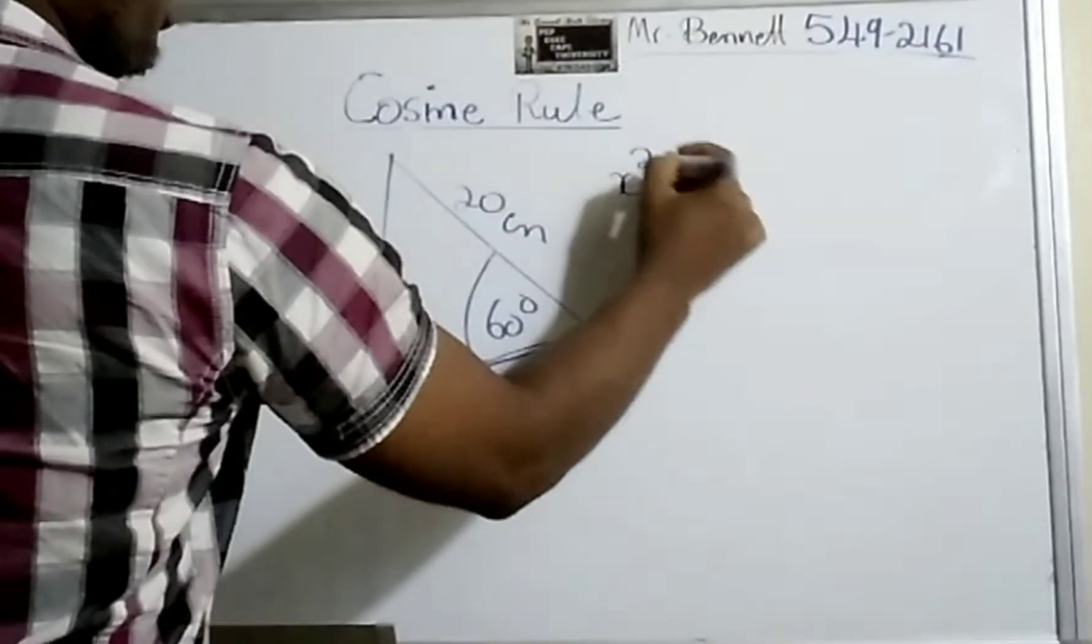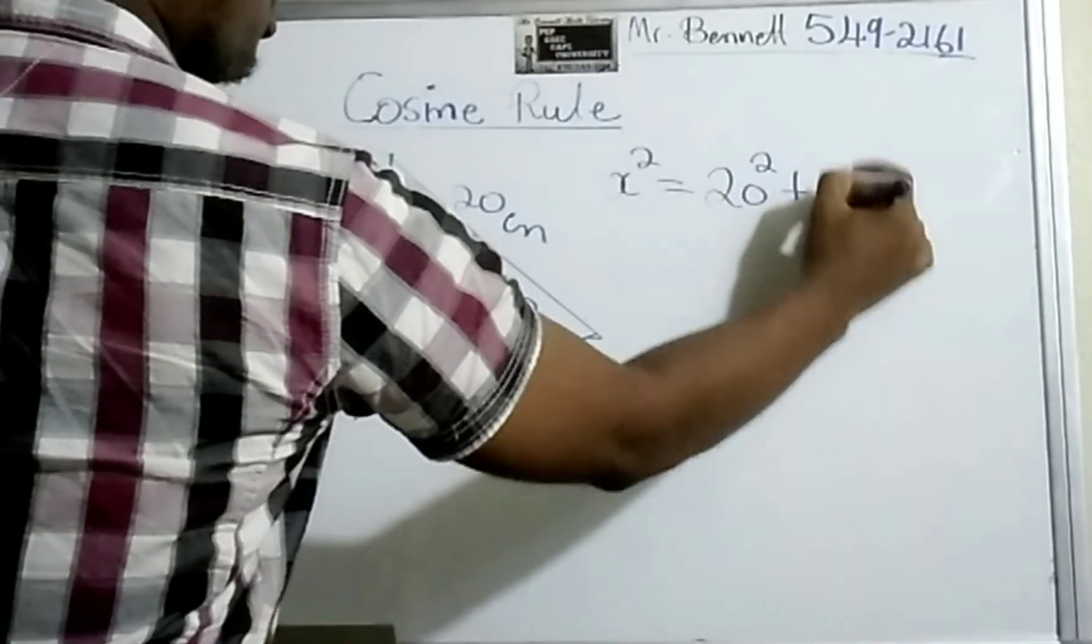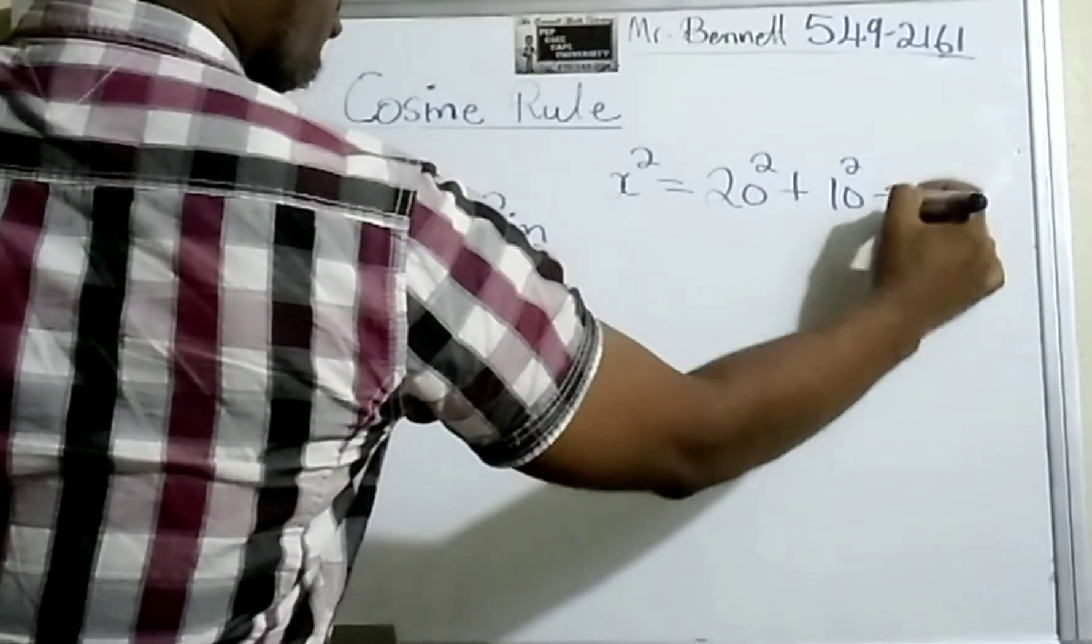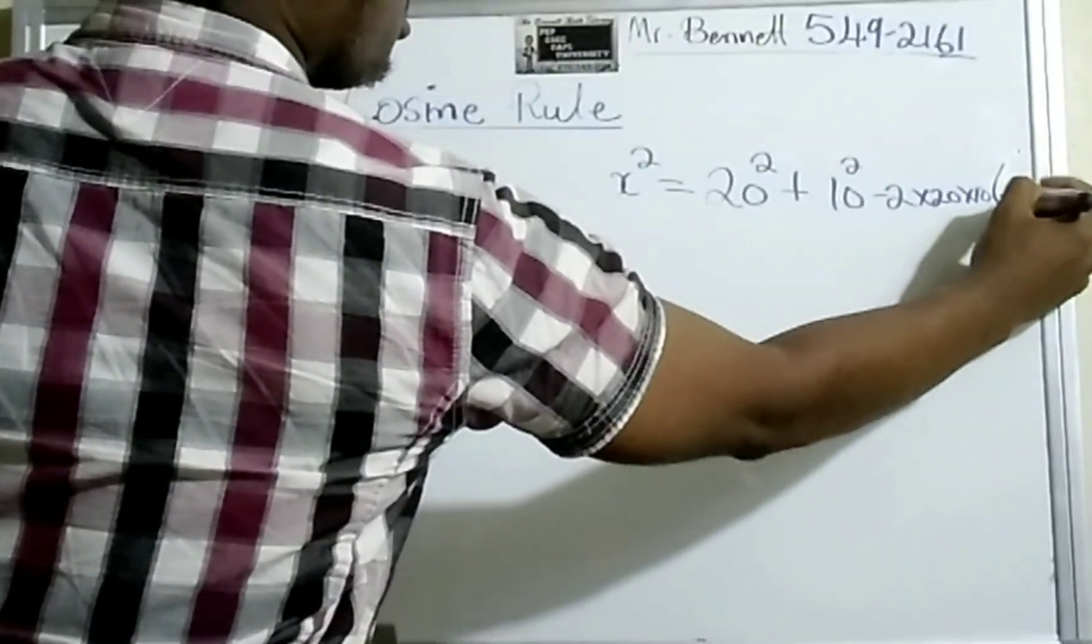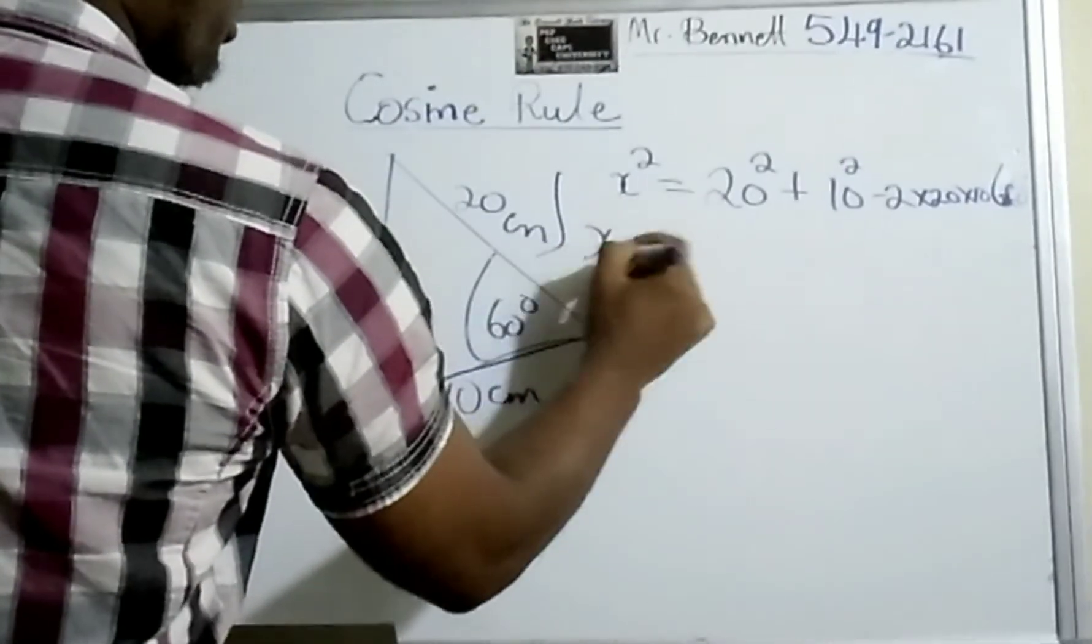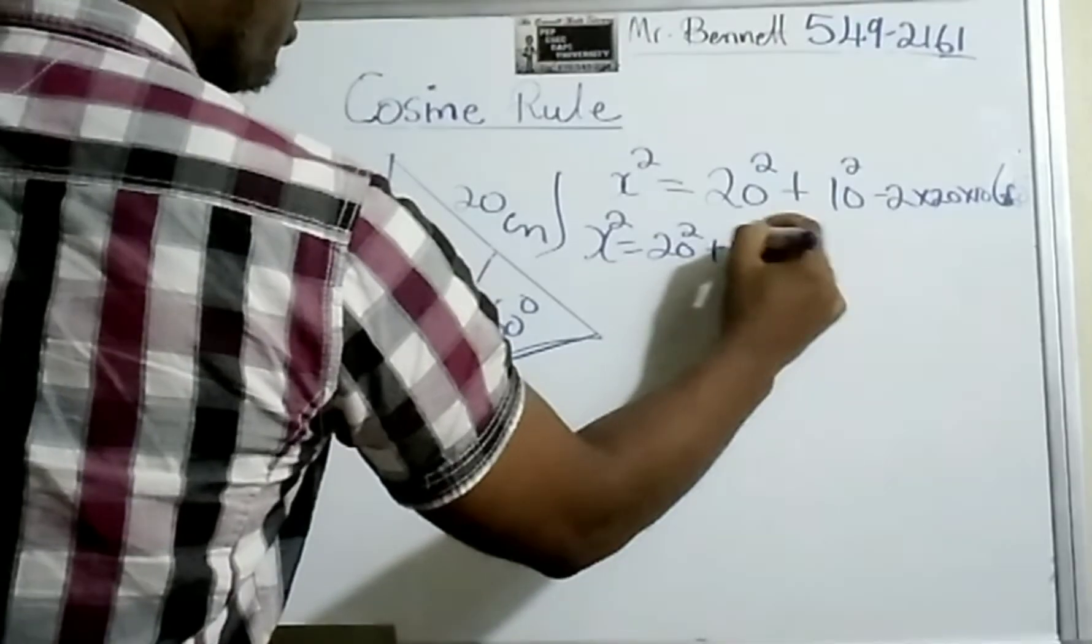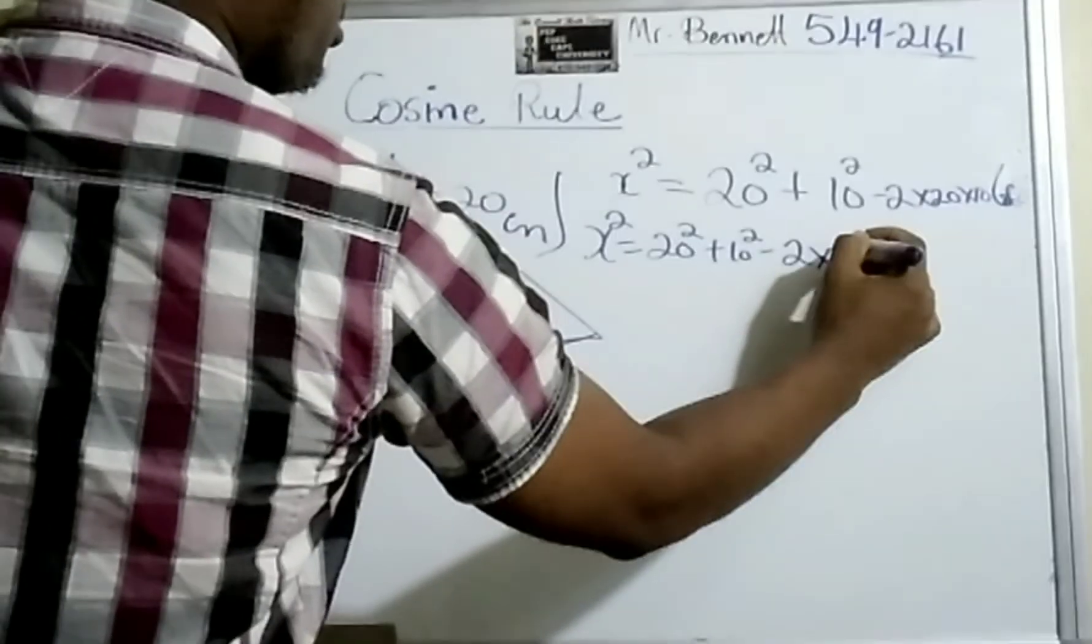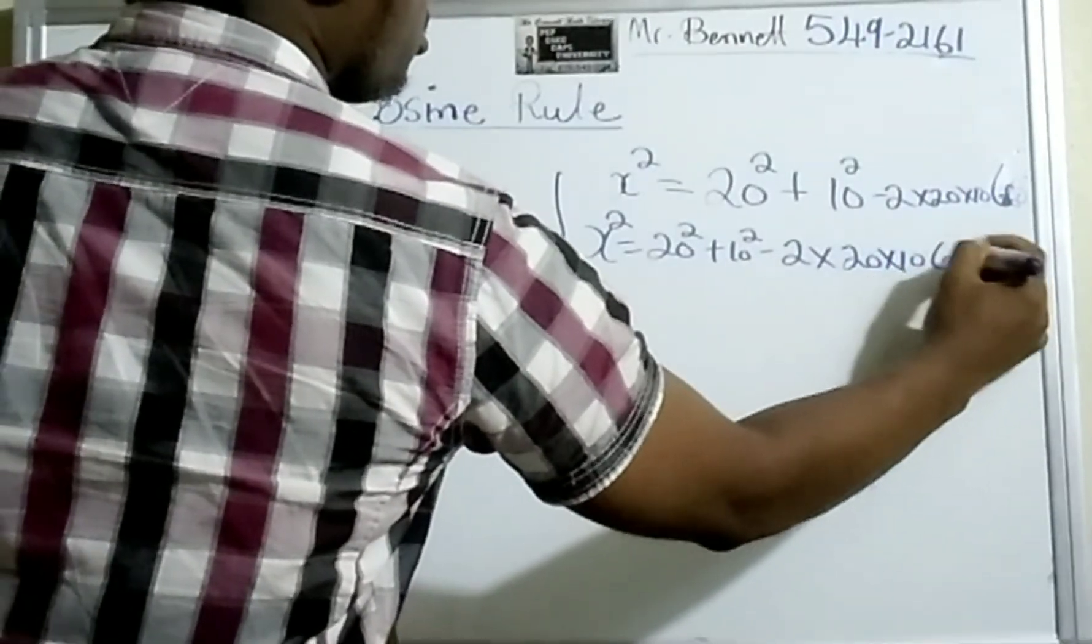x² is equal to 20² + 10² - 2 × 20 × 10 × cos 60 degrees.